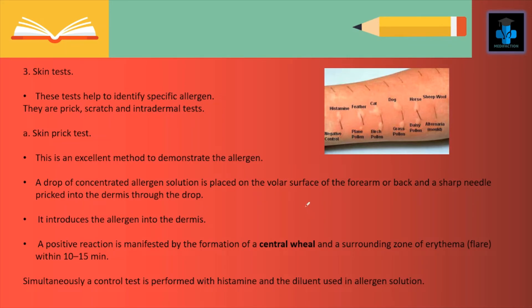Next we have skin tests, which help to identify the specific allergen. We have the prick test, scratch test and intradermal test. The skin prick test is an excellent method to demonstrate the allergen: a drop of concentrated allergen solution is placed on the volar surface of the forearm or back and a sharp needle is pricked into the dermis through the drop. A positive reaction is manifested by the formation of a central wheal and surrounding zone of erythema or flare within 10–15 minutes. A control test is simultaneously performed with histamine and the diluent used in the allergen solution.